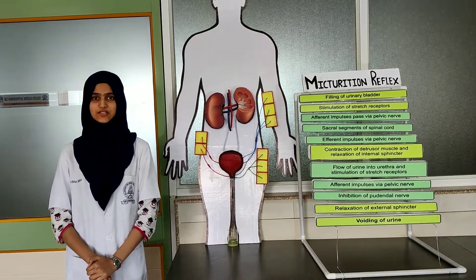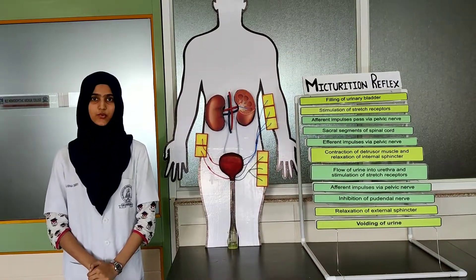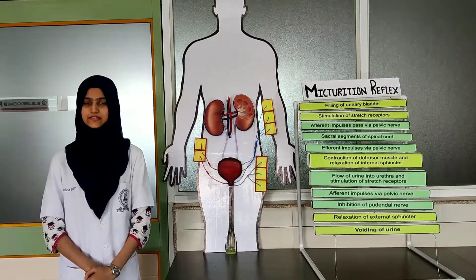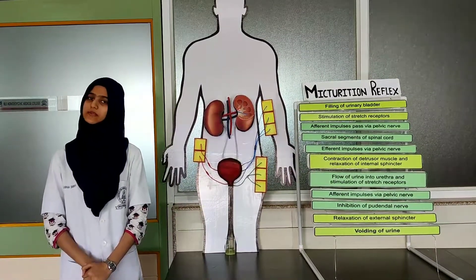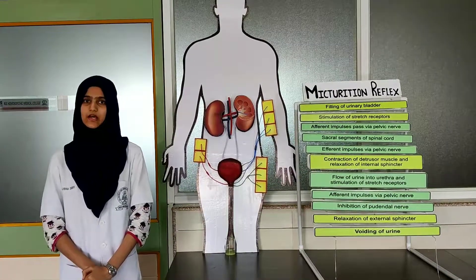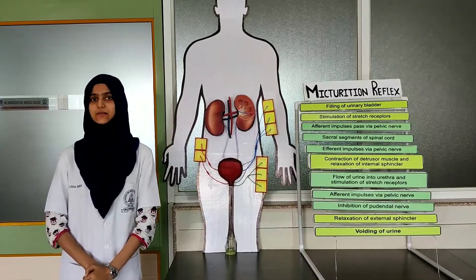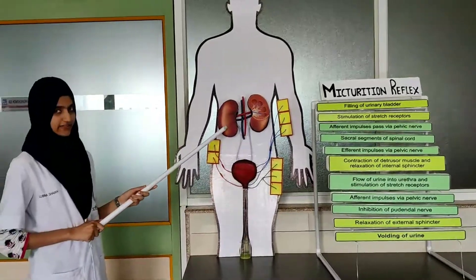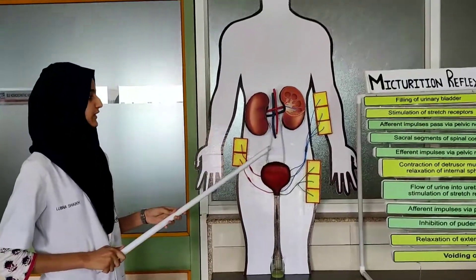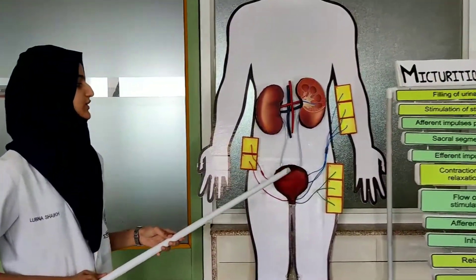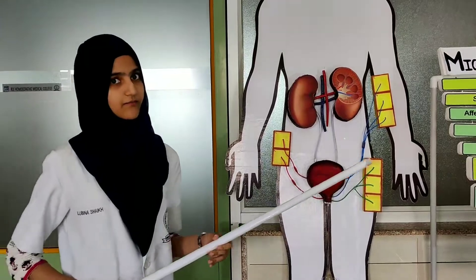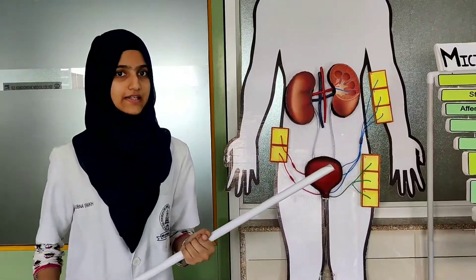Excretion is a process through which metabolic waste materials are removed from the body. The renal system includes a pair of kidneys, ureter, urinary bladder, and urethra.